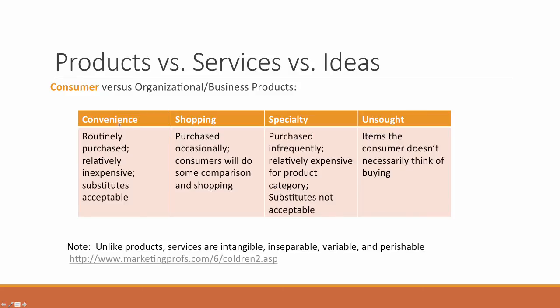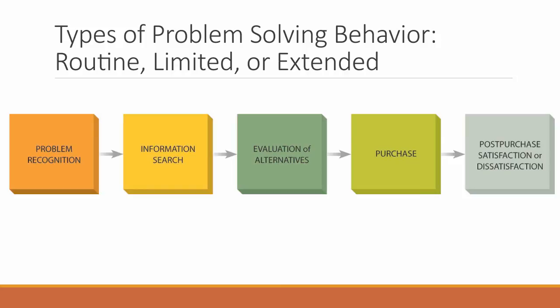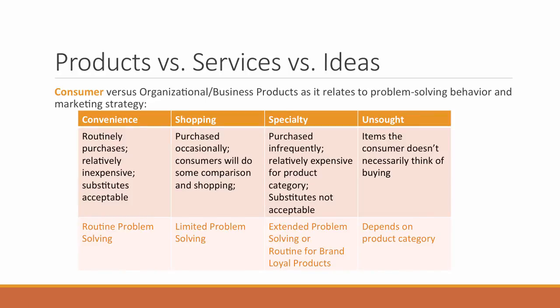Let's revisit the categories of consumer products — convenience, shopping, specialty, and unsought — in relation to consumer problem-solving behavior. We previously talked about consumers going through problem recognition, information search, evaluation of alternatives, purchase, and post-purchase evaluation. We classified the speed and extent of this process as either routine, limited, or extended problem-solving behavior. We can now see how consumer behavior relates to the products we're selling.